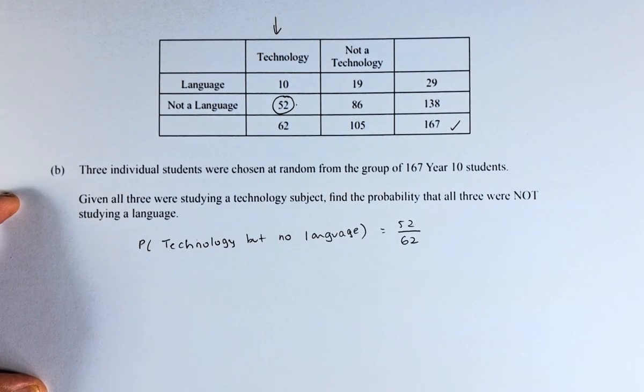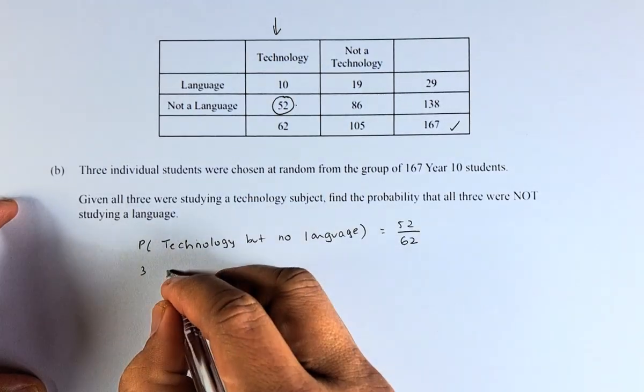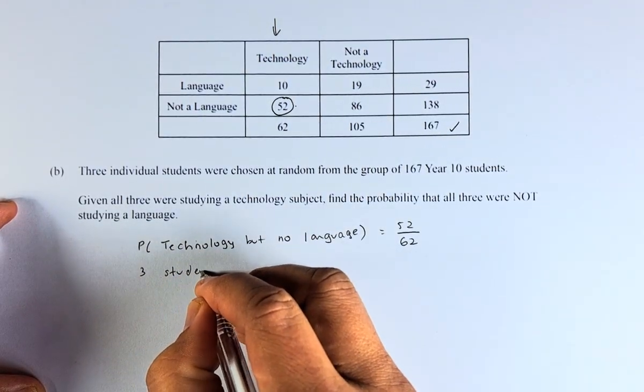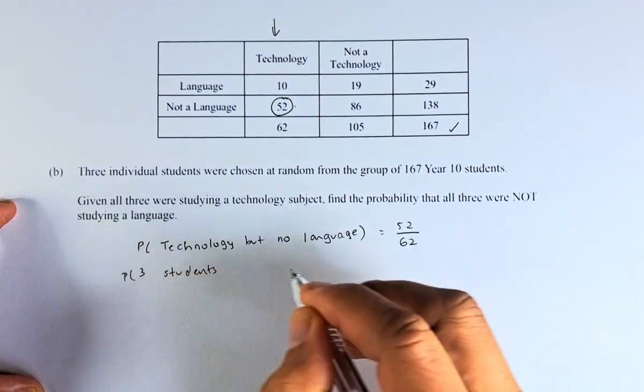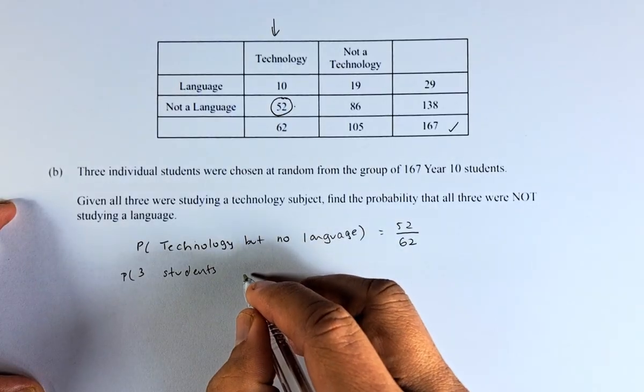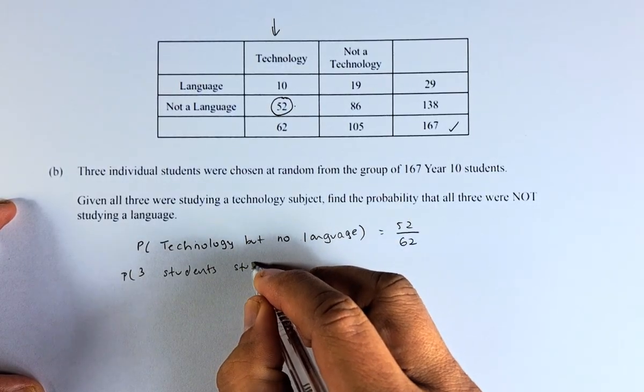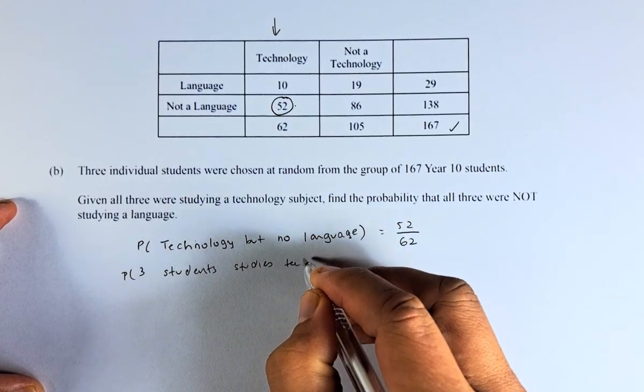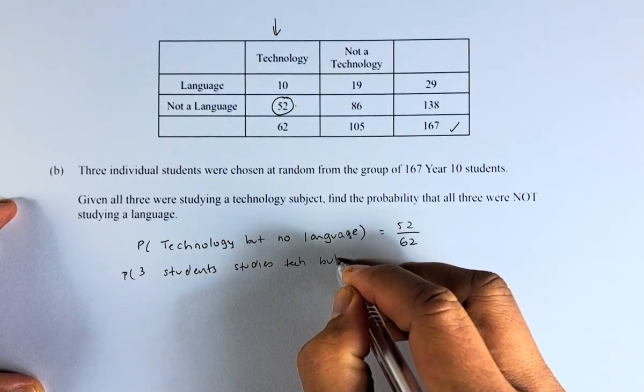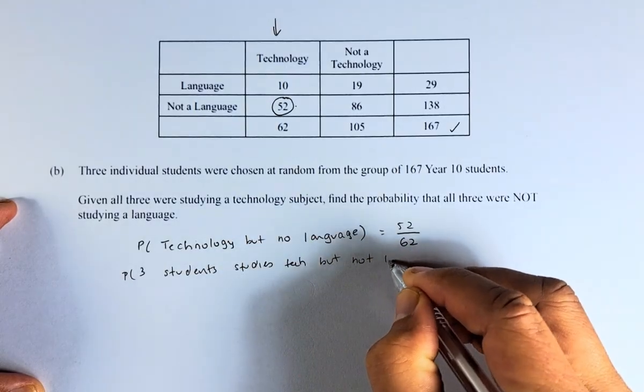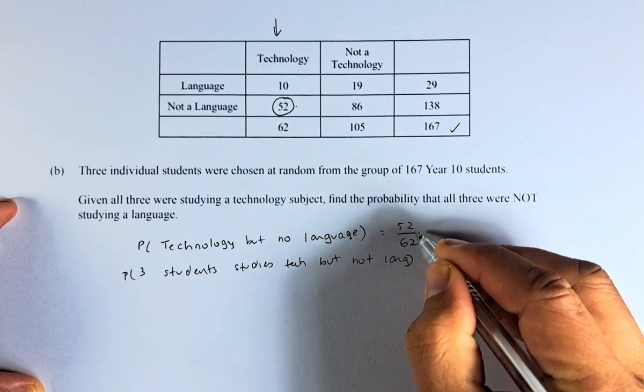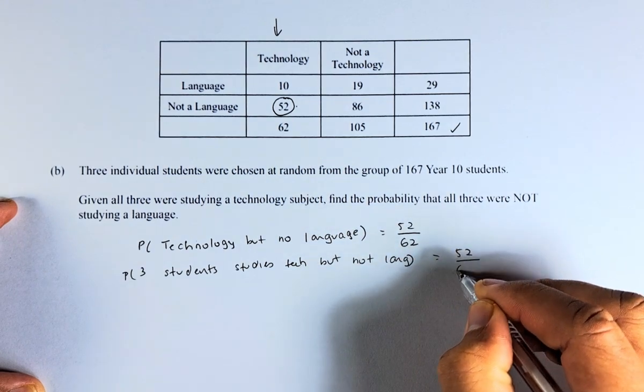The probability of 3 students that study technology but not language: the first student is 52 over 62.